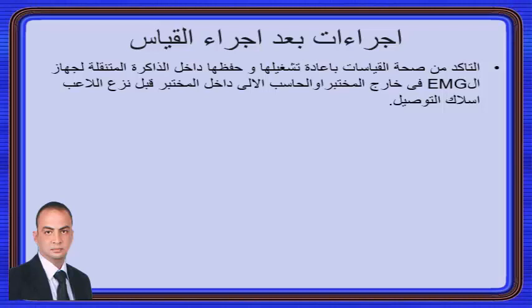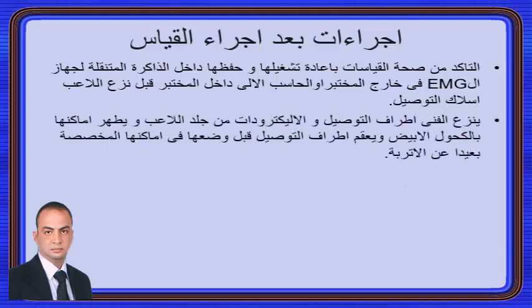لو كنا في الملعب خارجاً نستعرض البيانات من خلال جهاز EMG على الشاشة الصغيرة المحمولة قبل العودة للمختبر، للتأكد من عدم وجود نقص أو مشاكل في البيانات. بعد ذلك نزع أطراف التوصيل والأقطاب، ونطهر مكان القطب جيداً؛ نعطي اللاعب قطنة بمحلول معقم مثل الكحول لتنظيف المكان جيداً. الفني يمسك أسلاك التوصيل ويطهرها بقطعة قطن بالسبيرتو أو أي طريقة تعقيم مناسبة للحفاظ على الأطراف صالحة للاستخدام في قياسات أخرى.